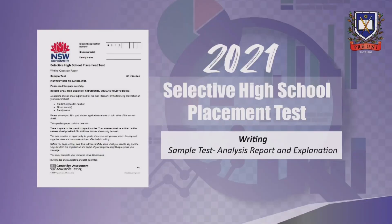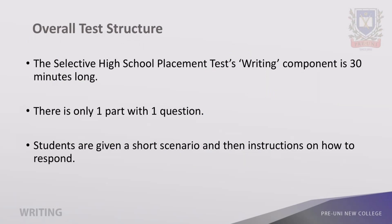Welcome to an overview of the Selective High School Placement Test for Writing. The writing component is 30 minutes long. There is only one given part with one question. Students are often given a short scenario of around two to three sentences, followed with an instruction on how to respond.